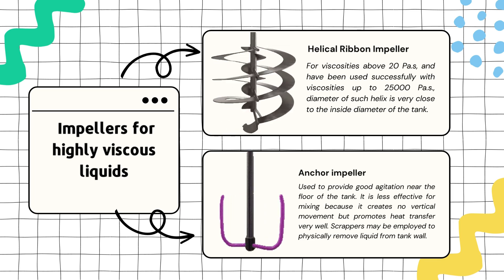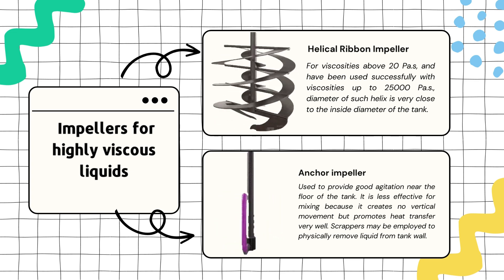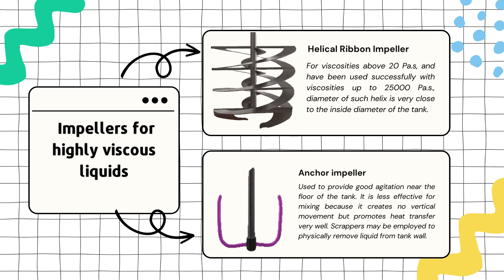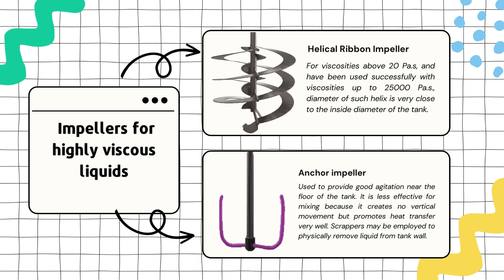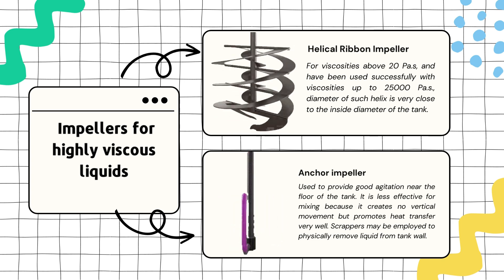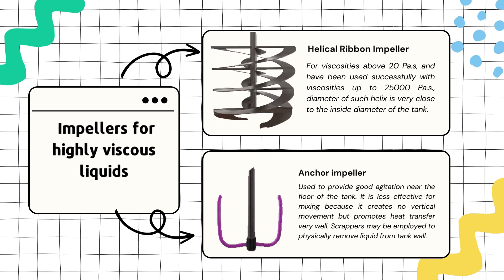For the summary of high efficiency impellers: they are designed to improve mixing efficiency, while impellers for high viscous liquids are specialized tools for handling thick liquids. They serve specific purposes in industrial mixing applications, ensuring efficient and effective mixing depending on the properties of the liquid being processed.